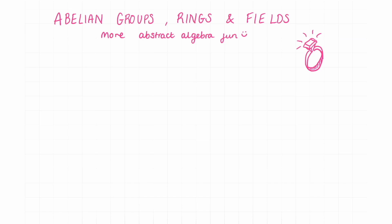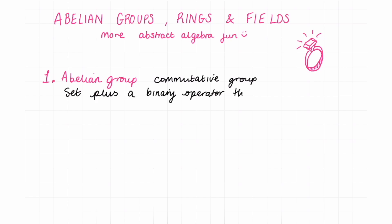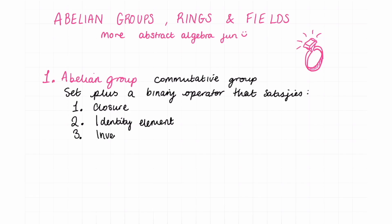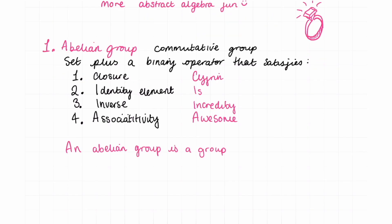Let's define these mathematical structures in abstract algebra so that when we see them written in context we understand what they mean. Number one is an abelian group, also known as a commutative group. This is a group — a set plus a binary operator — that satisfies: closure, an identity element, every element has an inverse, and associativity. We remember this with the acronym CIIA — which is incredibly awesome.